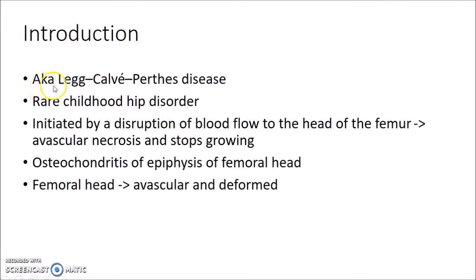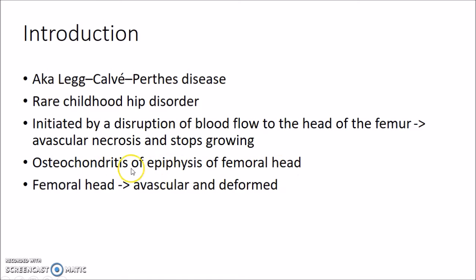Perthes disease is also known as Legg-Calvé-Perthes disease. It is a rare childhood hip disorder. Perthes disease is initiated by a disruption of blood flow to the head of the femur. This disruption causes avascular necrosis of the head of femur and the bone stops growing. Perthes disease is basically osteochondritis of the epiphysis of the femoral head, causing the femoral head to become avascular and deformed.